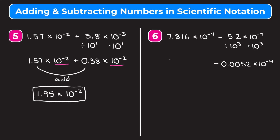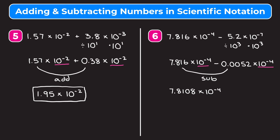I'm going to keep my first number the same: 7.816 times 10 to the negative fourth. Now because our powers of 10 are the same, we're going to subtract the two numbers in front. 7.816 minus 0.0052 gives us 7.8108, and we multiply this by 10 to the negative fourth. So we get 7.8108 times 10 to the negative fourth as our answer.